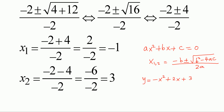So if you are given negative x squared plus 2x plus 3 is equal to 0, when you substitute x equals negative 1, it should go to 0. Wherever you have x, substitute negative 1. What is negative 1 to the power of 2? It is positive 1. And what is negative of positive 1? It is negative 1. So you have negative 1 plus 2 times negative 1 plus 3, and that is equal to 0.